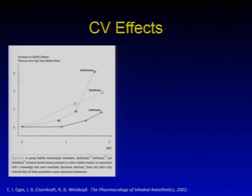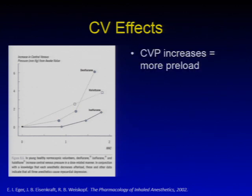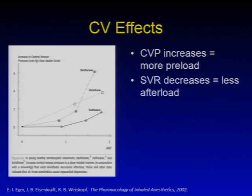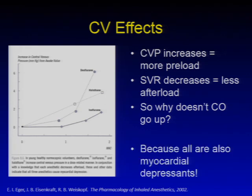As MAC increases, you actually get an increase in central venous pressure from the awake value, meaning preload is increasing. SVR decreases. So why don't we get a big rise in cardiac output for all the agents? The reason is pretty simple: all the agents are myocardial depressants as well, and that's something you have to keep in mind regarding the cardiovascular effects in general.